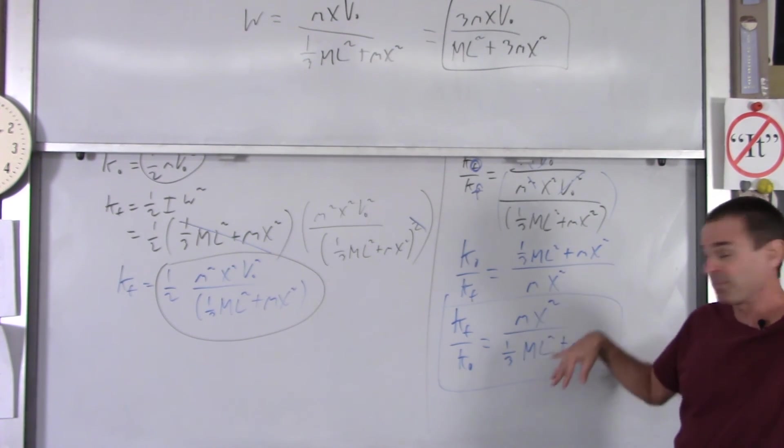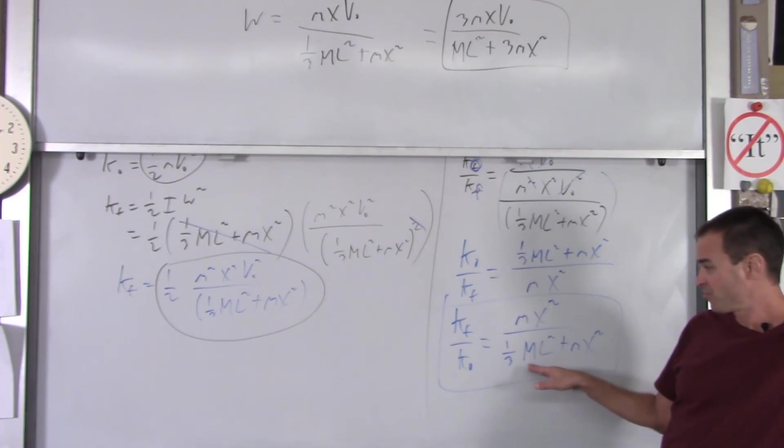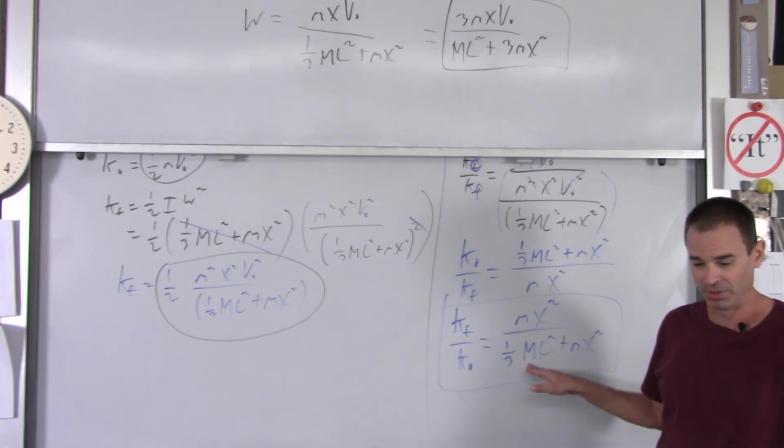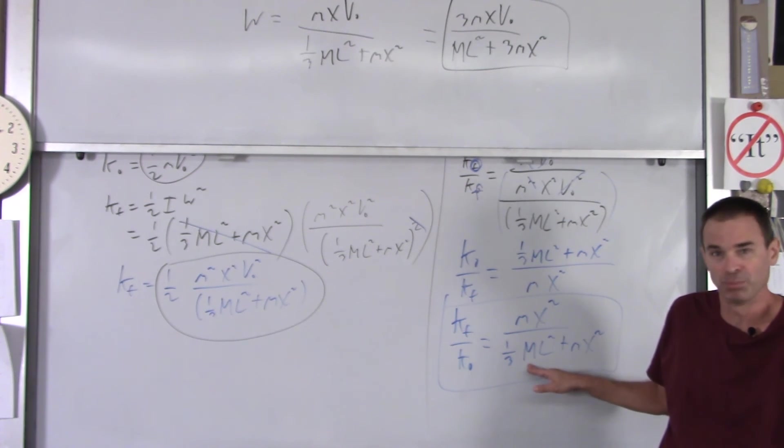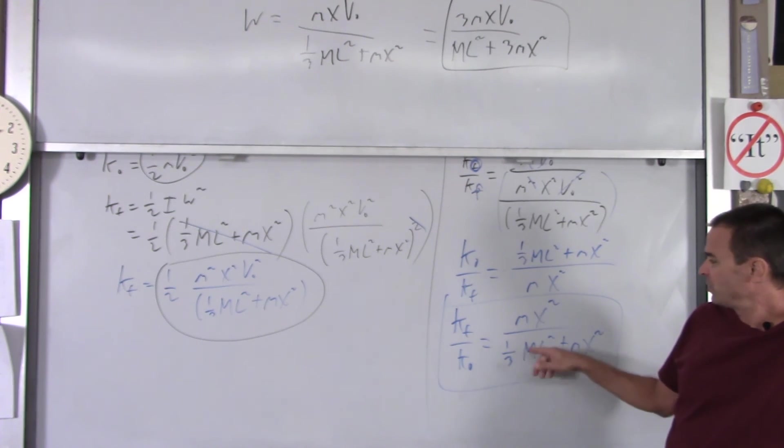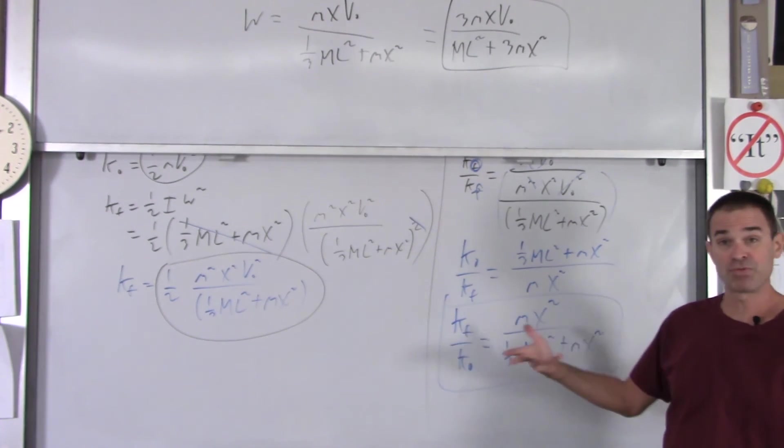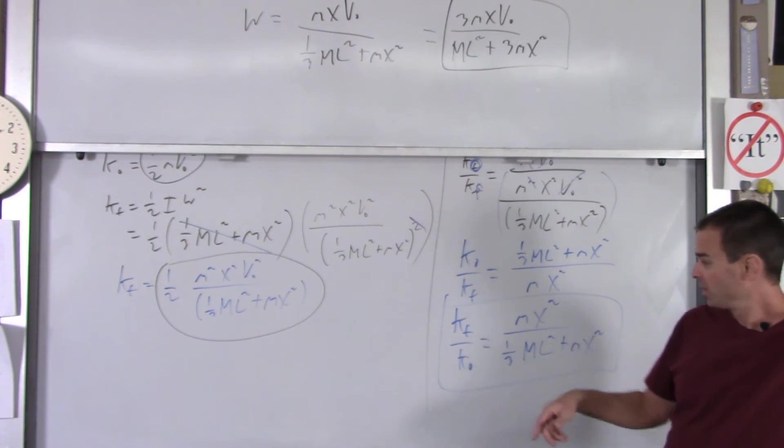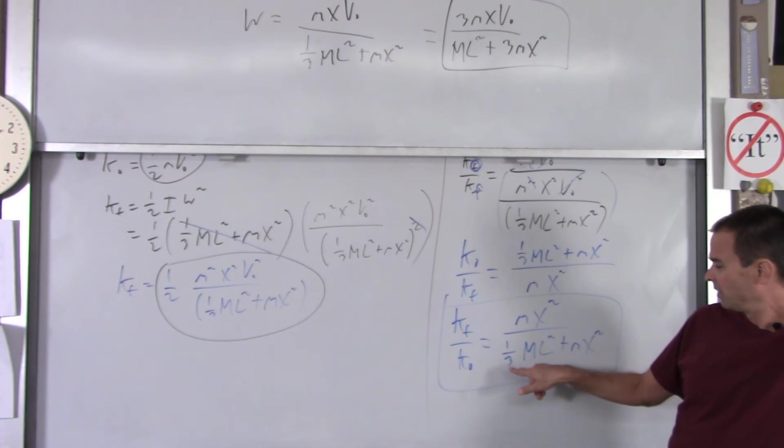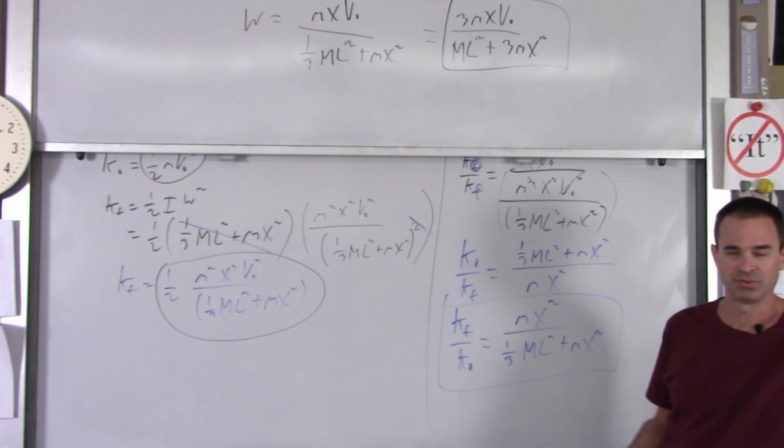And let's say the mass of the rod was 30 times the mass of the bullet, which is quite reasonable. Then you just got little m over 1/3 big M plus little m, which would be, let's make little m 1. And big M is 30 times that, so we'll just call it 30. So this would be 1 over 1/3 of 30 is 10 plus 1, 1/11. So you have like 9% of your kinetic energy left.